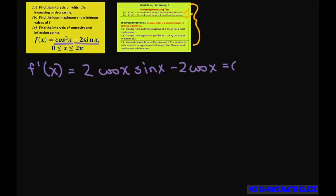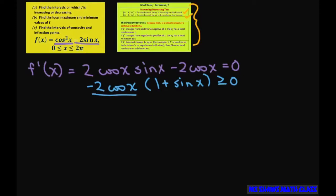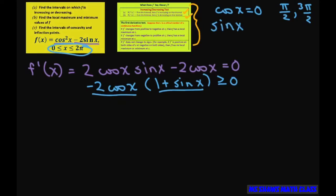And then you set it to 0. So let's factor out a negative 2 cosine of x, and inside we get 1 plus sine of x. So if you set negative 2 cosine of x to 0, divide both sides by negative 2, you get cosine of x equals 0 at pi divided by 2 and 3 pi divided by 2 on this interval. And then 1 plus sine of x gives you sine of x is greater than or equal to negative 1, and that's going to be at 3 pi over 2, which we already have.